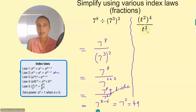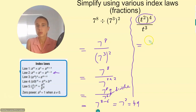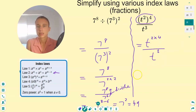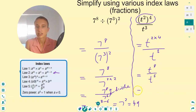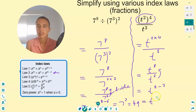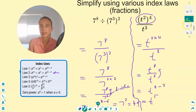Next one: t squared to the four, over t cubed. With fractions, simplify the numerator first, then the denominator. On this numerator we've got a power raised to a power, so we multiply those indices — t to the eight. Then we have t to the eight on t to the three. If we're dividing terms with the same base, we subtract the powers — that's law two. Eight minus three gives us t to the five as our answer.